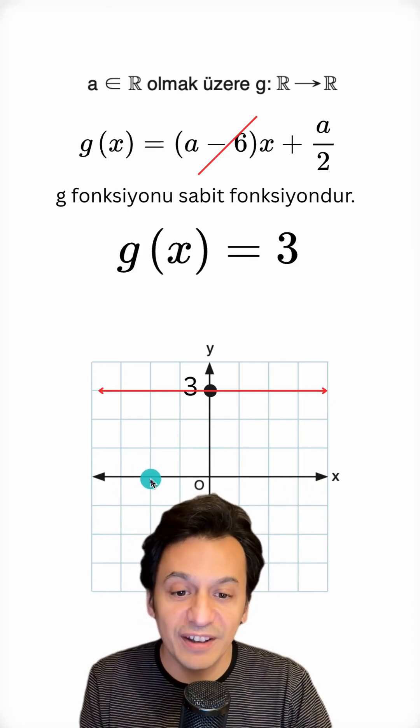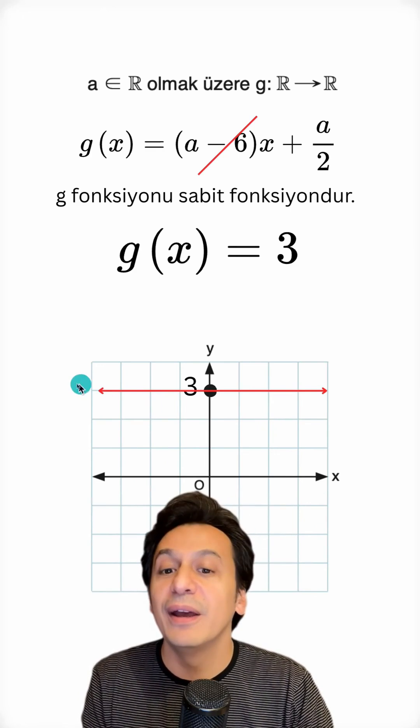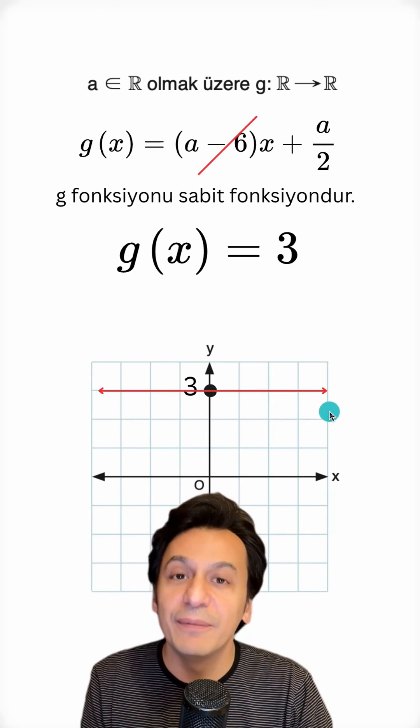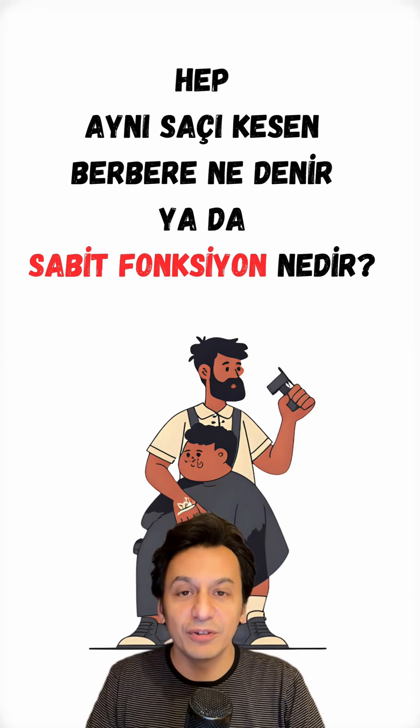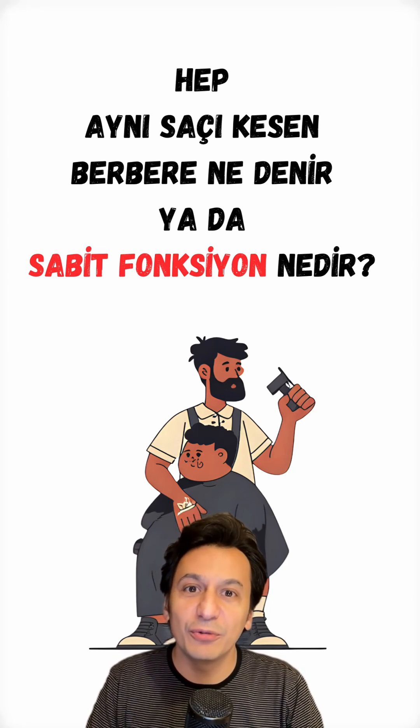Look, if I say cut this hair or cut that hair or cut the hair over here, it will always cut the same hair for me. And that's a constant function for you. If you have creative examples about constant functions, please don't forget to write them in the comments.